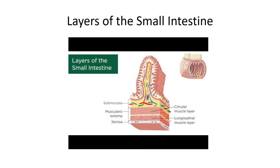We're going to do a recap of the layers of the small and large intestine before we get into ulcerative colitis and Crohn's disease — just to rehash what you've already learned in anatomy and physiology. The layers of the small intestine include the serosa, muscularis, submucosa, and then the finger-like projections at the top called the villi, which help with nutrient absorption. Remember, the villi become destroyed when a patient with celiac disease consumes gluten.